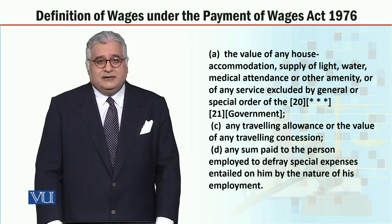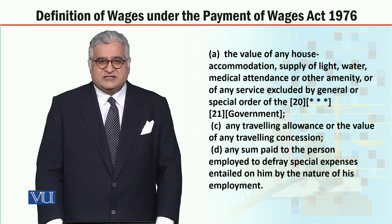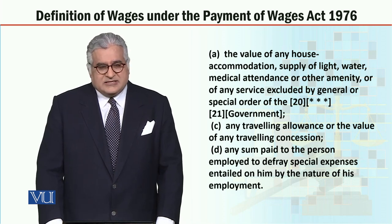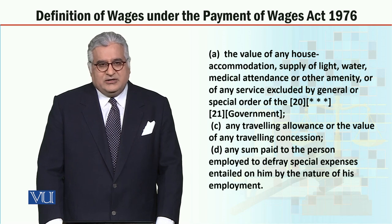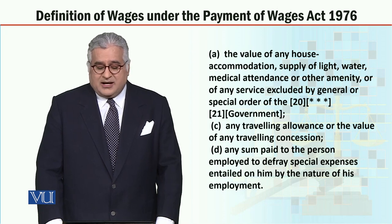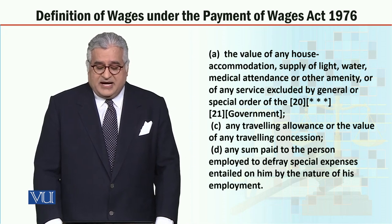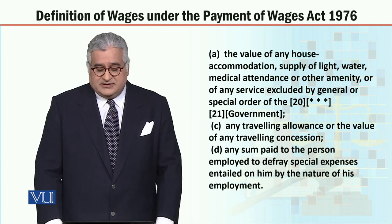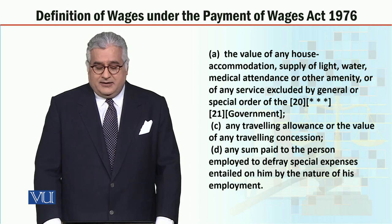But does not include — wages में क्या शामिल नहीं है: the value of any house accommodation — कोई house accommodation दी हुई है वो wages में शामिल नहीं है। Supply of light, water जो supply है, medical attendance, और other amenity — कोई और सहूलत — wages में شامل नहीं है۔ Or of any service excluded by general or special order of the government — وہ بھی wages کی definition میں شامل نہیں۔